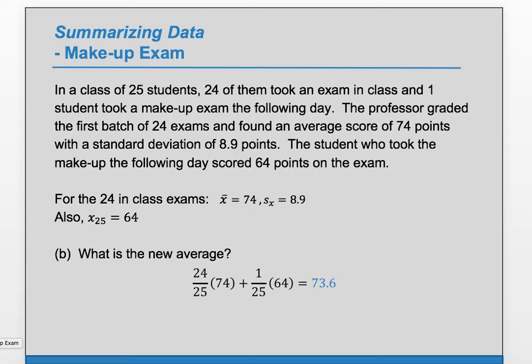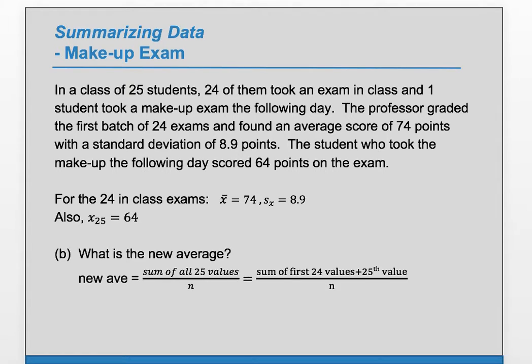Let's look at this a different way. We know that the new average should be the sum of all 25 values over n. n, in this case, is 25. How do I find the sum of all 25 values? I have to find the sum of the first 24 values and then add on the 25th value, which is known, of 64.